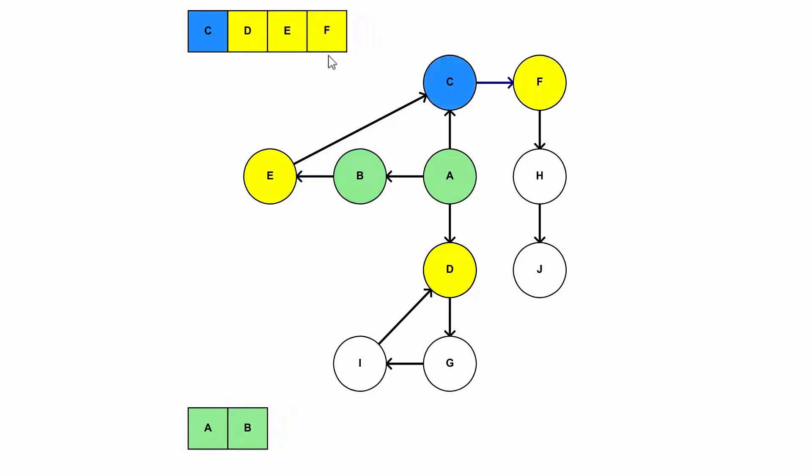We continue on: C has a child of F, D has a child of G, and E has one child which is C, but we've already visited that one so we don't add it to the queue again.